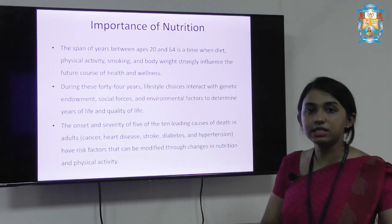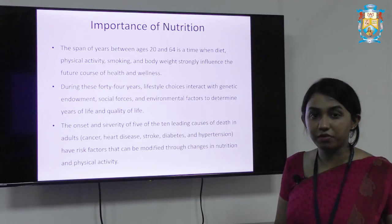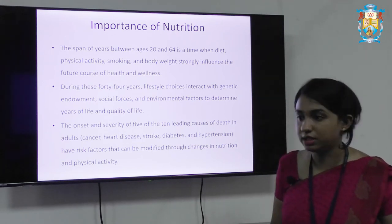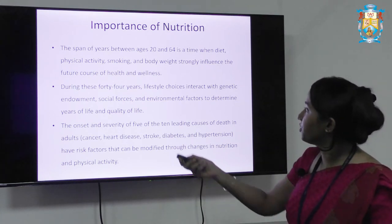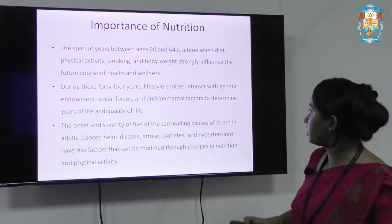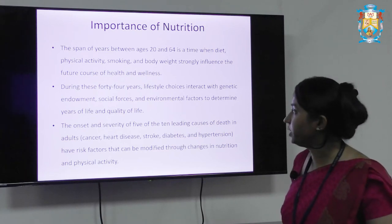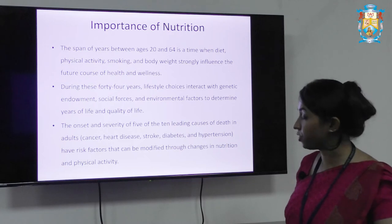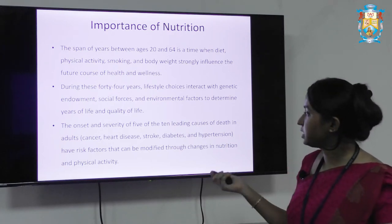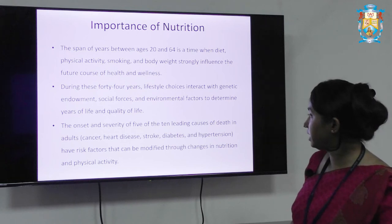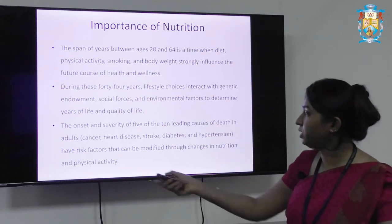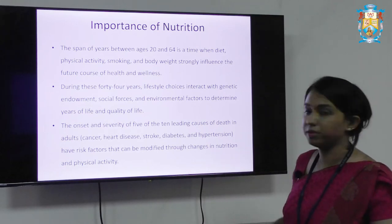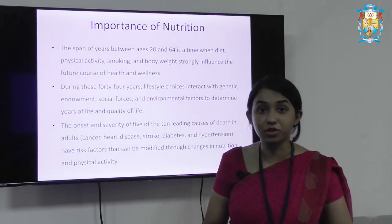During the forties is the time where the body will start declining its activity, and that is when we have to give more importance to physical activity. During the forties, lifestyle choices interact with genetic endowments, social forces, and environmental factors to determine years of life and the quality of life. The onset and severity of 5 of the 10 leading causes of death — which are cancer, heart diseases, stroke, diabetes, and hypertension — are all known as lifestyle disorders.